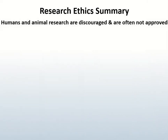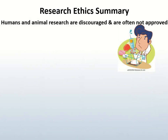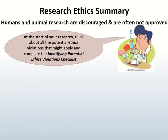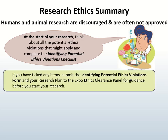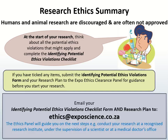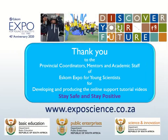Here is a quick summary. At the start of your research, if there are potential ethics violations, complete the Identifying Potential Ethics Violations Checklist and email this checklist to the Ethics Clearance Panel using ethics@exposcience.co.za. We hope that this video has helped you understand ethics in research and the procedures to follow. Our next video will help you write your aim, research questions, and variables. Thank you and good luck.